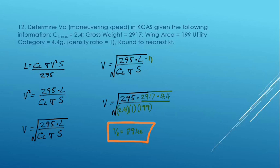Problem 11 is identical to problem 12, except for the category of airplane, which is a 4.4 G airplane or is certificated in the utility category. So we would anticipate that the stall speed would go up.